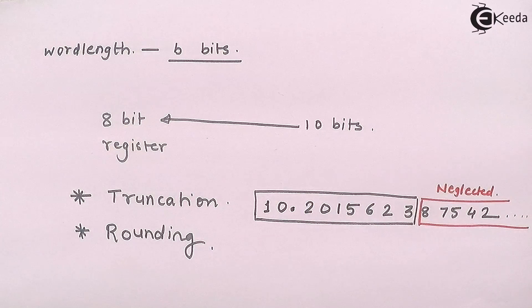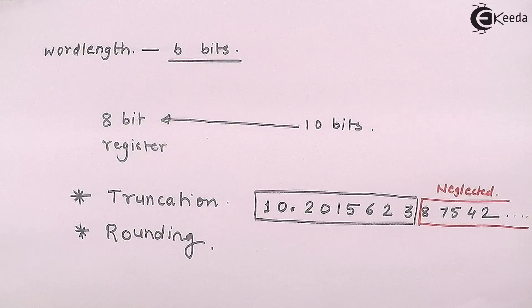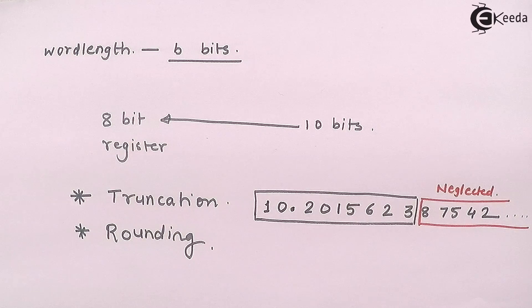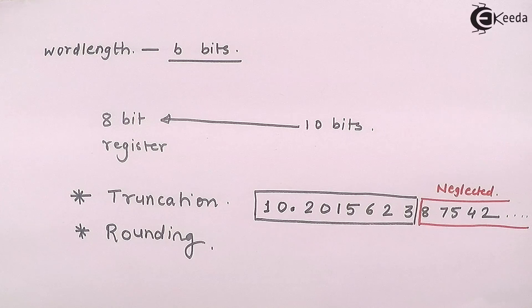So when I neglect 8, 7, 5, 4, 2 and so on numbers, this type of method of fitting a number is called as truncation. That we truncate or stop the numbers wherever required and then rest all the numbers are neglected. So this is called as truncation.